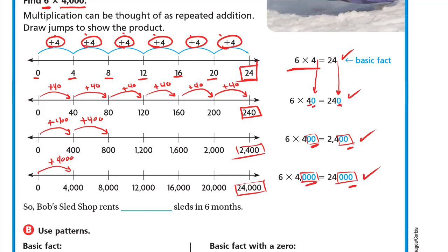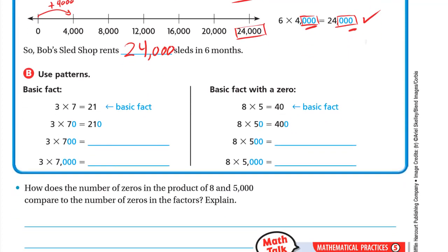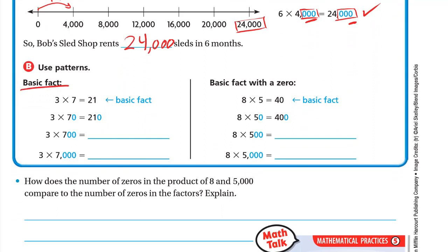The answer is 6 times 4,000 equals 24,000, so the bobsled shop rents 24,000 sleds in six months. Now let's use patterns. The basic fact is 3 times 7 equals 21. If 7 becomes 70, we put one zero to the right, so the product becomes 210. With 700, we have two zeros, giving 2,100. With 7,000, three zeros give 21,000.